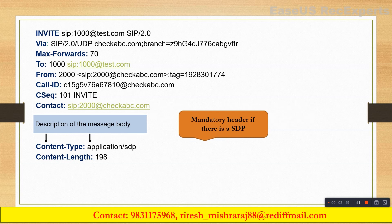Content-Type is a mandatory header and it shows you the type of message contained in the media body. Usually we will see SDP, because Session Description Protocol is used to send and receive media parameters in SIP. I will create a separate video to explain the SDP messages, since SDP also contains a lot of parameters that need to be understood. So Content-Type shows you what type of message the SIP body contains — and usually we will see 'application/SDP'.